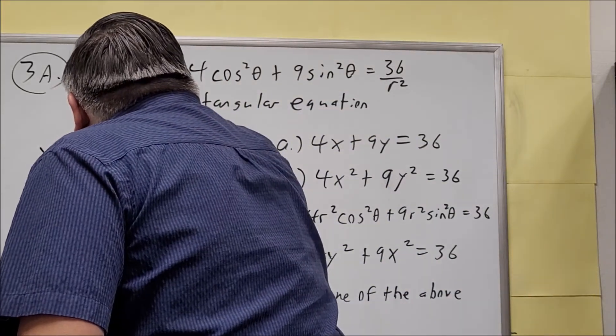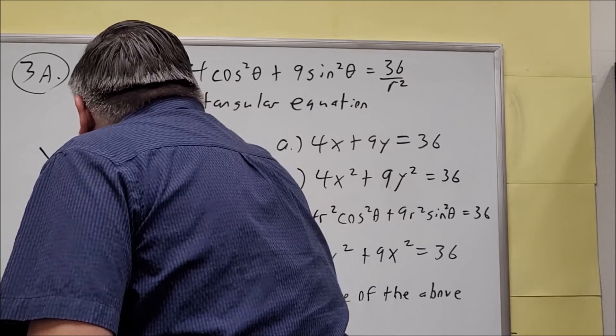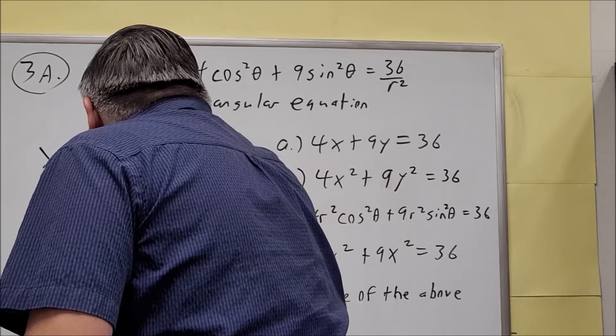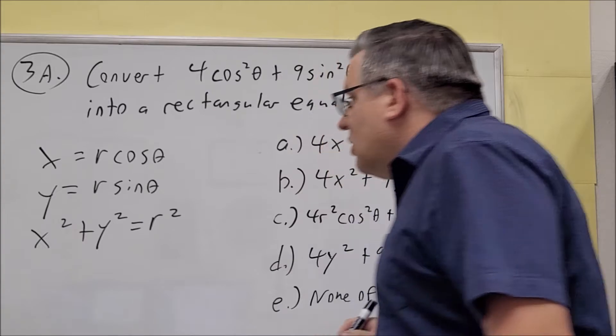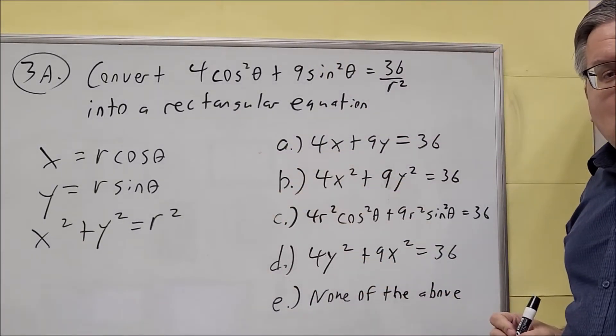x equals r cosine theta, y equals r sine theta, and x squared plus y squared equals r squared. So these are the conversion formulas that you need.